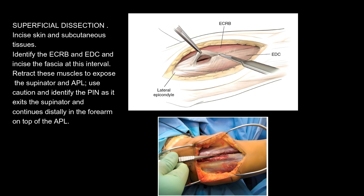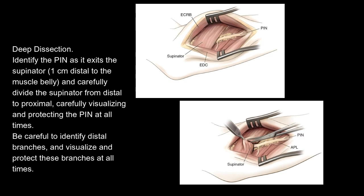Superficial dissection: Incise skin and subcutaneous tissues. Identify the ECRB and EDC and incise the fascia at this interval. Retract these muscles to expose the supinator and APL. Use caution and identify the PIN as it exits the supinator and continues distally in the forearm on top of the APL.